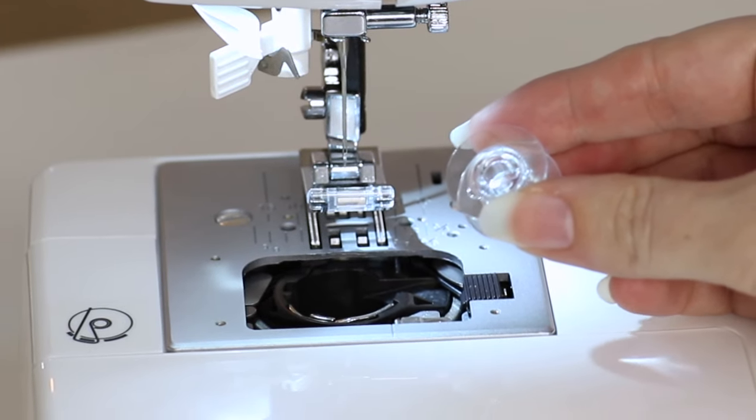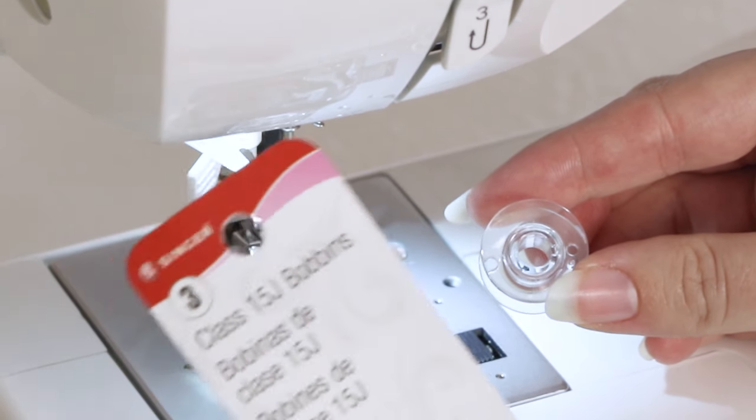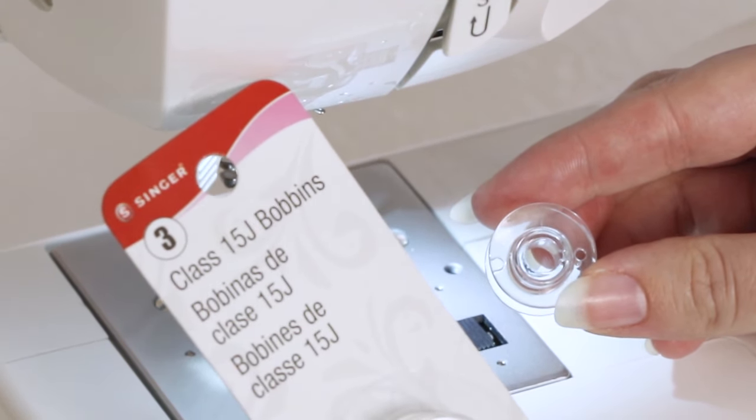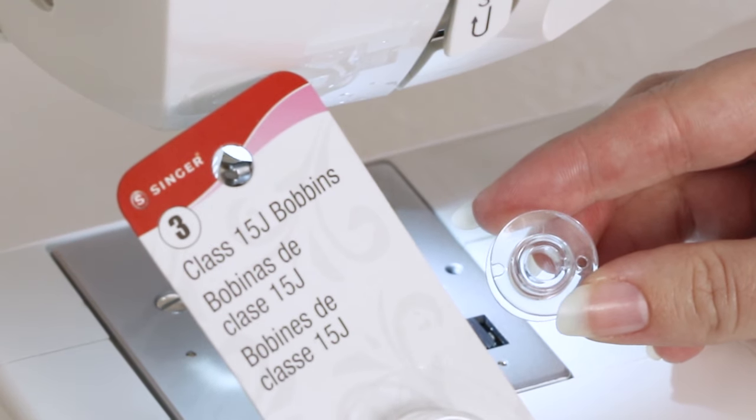This machine uses class 15J bobbins, so when you go to the store to purchase more bobbins make sure you purchase Singer class 15J bobbins.